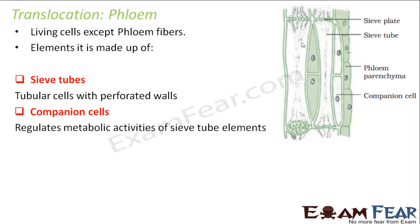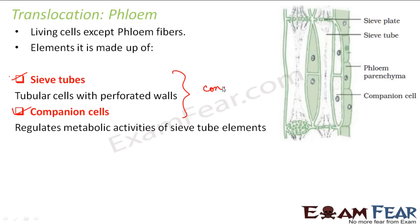Here you can see the sieve tube, the sieve plate with perforations, and the companion cells. The companion cells are kind of supporting the sieve tubes. Now these sieve tubes along with the companion cells are mainly used for conduction.